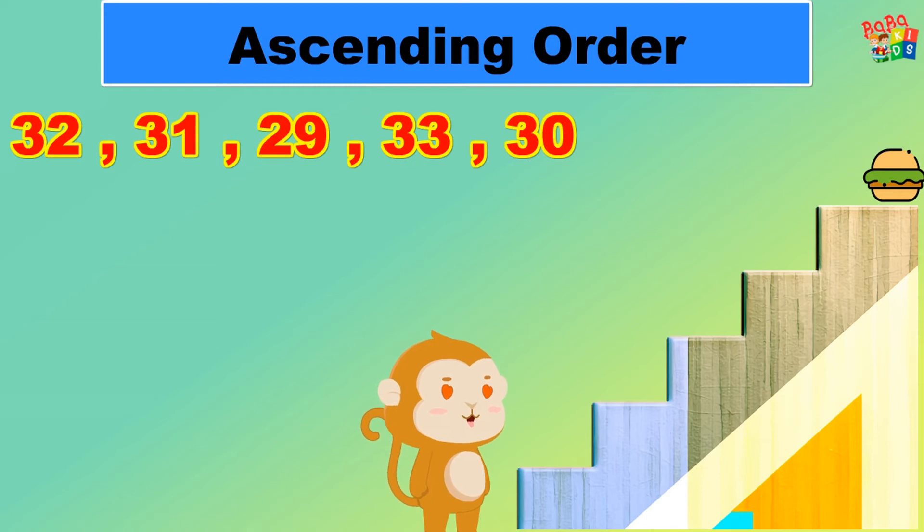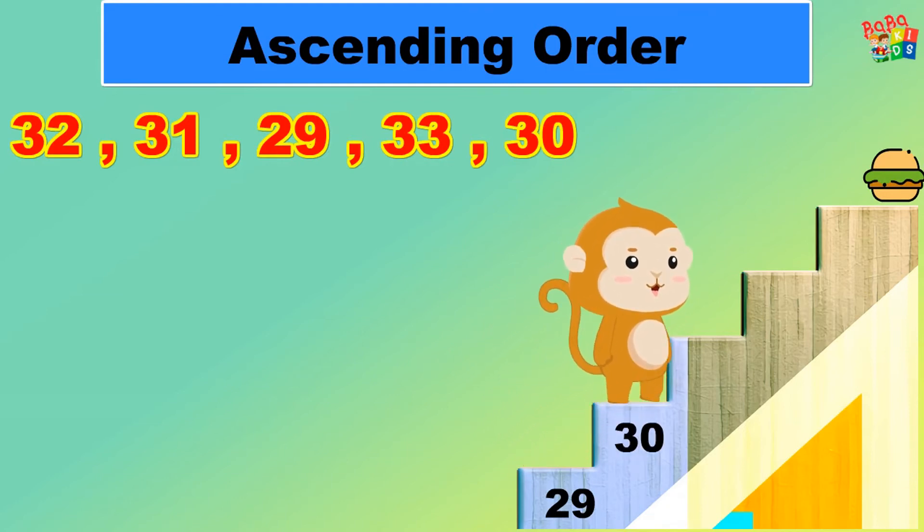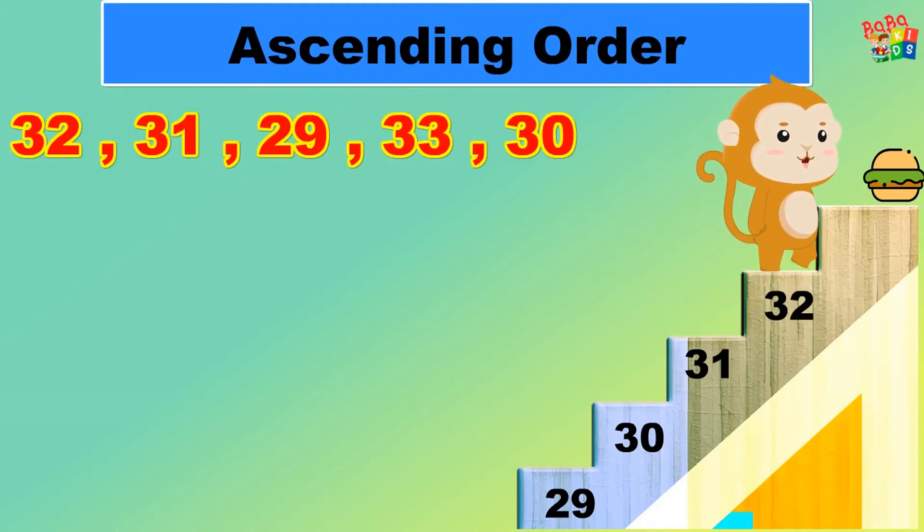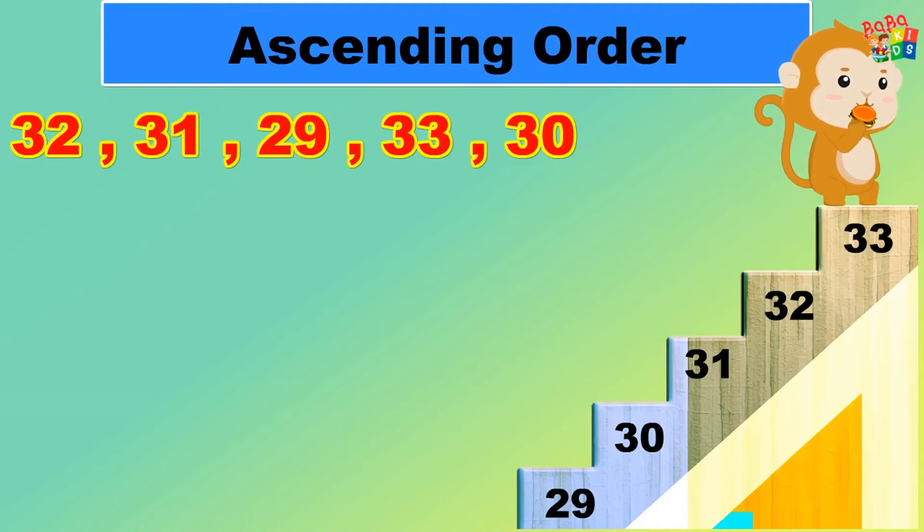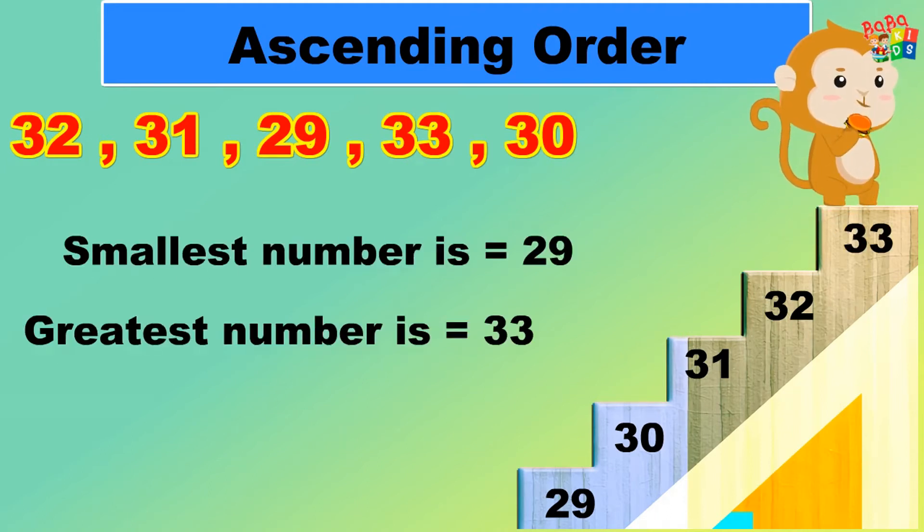From these given numbers, the smallest number is 29, and next number 30. Then 31, then number 32, then 33. He got his burger. Smallest number is 29, biggest number is 33.